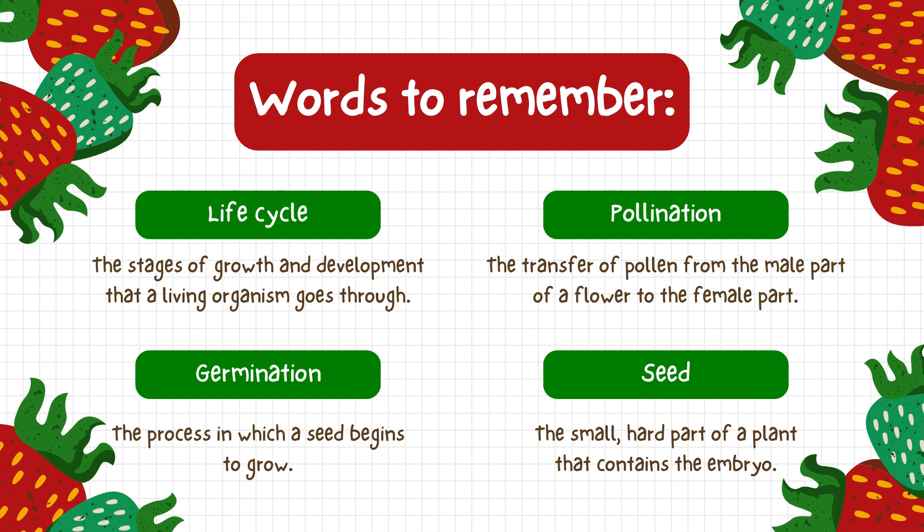Germination is the process in which a seed begins to grow. And the last word is seed — the small, hard part of a plant that contains the embryo is called the seed.